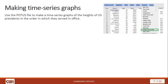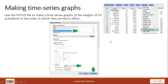Making a time series graph in StatCrunch is pretty simple. Using the POTUS file, go to Graph and then select Index/Time Plot from the dropdown menu. An options window comes up where you first select your data. You can have an index generated by StatCrunch, put in your own values, or use a time index by day or month with a starting year and increments.